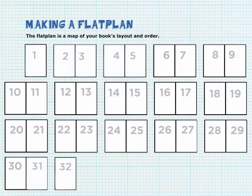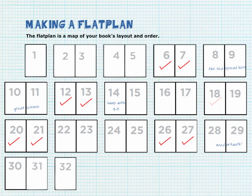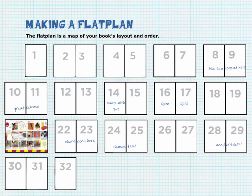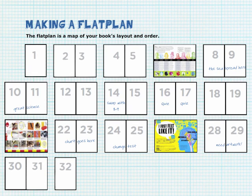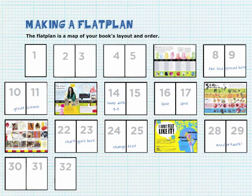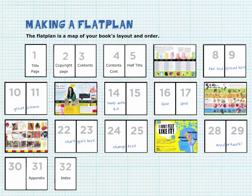Another really good idea when you're planning a book is to make a flat plan. A flat plan is a kind of a map of your book's layout and order, and it's really useful to help you plan the sequence of your pages, how your book progresses, the order of your pages, whether they need to be changed around or swapped. It's a really useful tool to just see at a glance and check the progress of your book. You can also see how many pages are going to be taken up by the title page, contents page, and copyright page. All those pages at the beginning of the book that don't contain any live content or artwork are called front matter, and all the pages at the end of the book like the appendix and the index that don't contain any live content or artwork are called end matter.